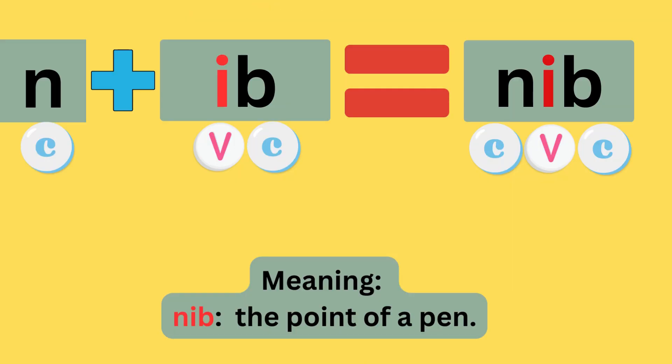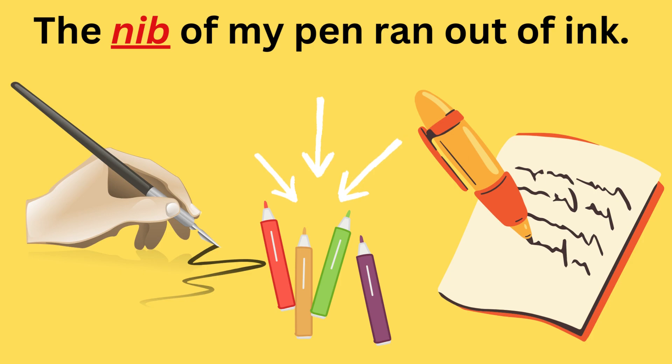N plus -ib equals nib. The sounds are: n-i-b — nib. The meaning is the point of a pen. The nib of my pen ran out of ink.